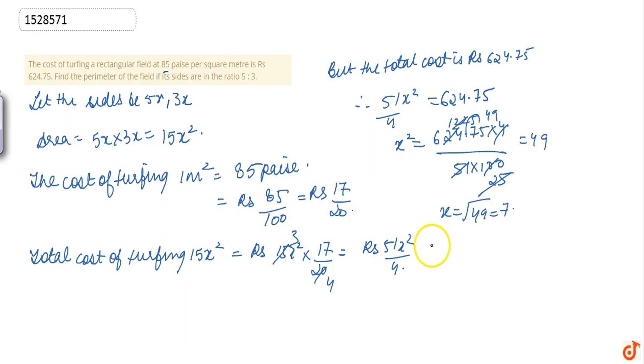Then, the value of length is 5x, that is 5 into 7, which is 35. And breadth, the value of breadth is 3x, which is 3 into 7, equals to 21.